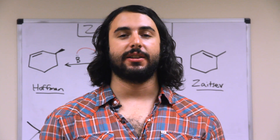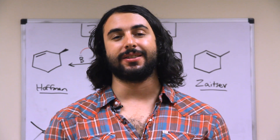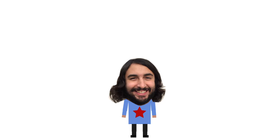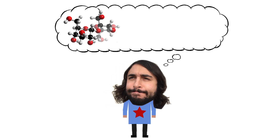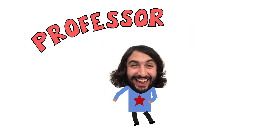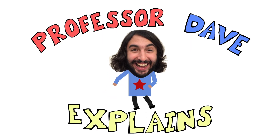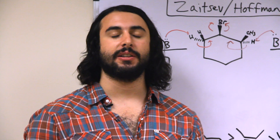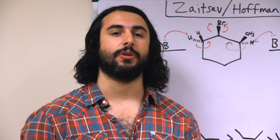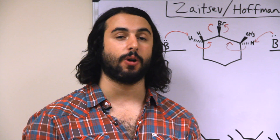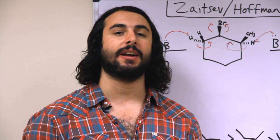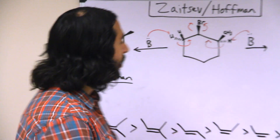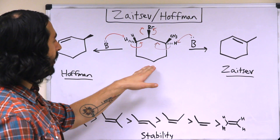Hey guys, Professor Dave here. Let's talk a little bit about Zaitsev and Hoffmann elimination products. Sometimes in an elimination reaction there can be more than one elimination product depending on which beta proton is extracted by the base. So let's take a look at this example here.